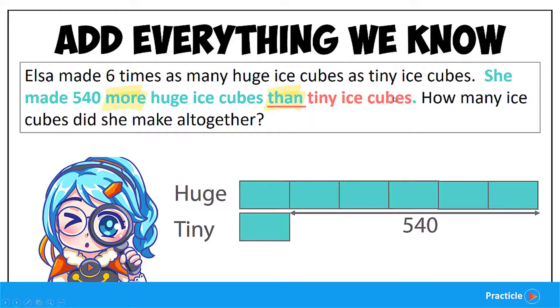Now let's look at the question again. Do we have any other information that we're supposed to add into our comparison model? Hmm, seems that we have everything covered. Great job everyone — our comparison model is complete.